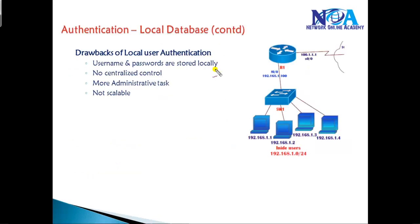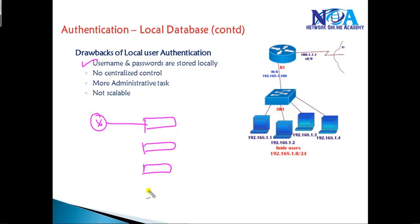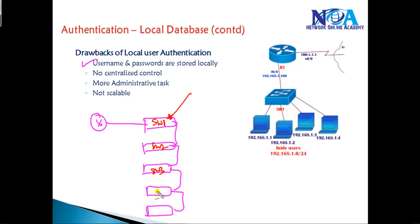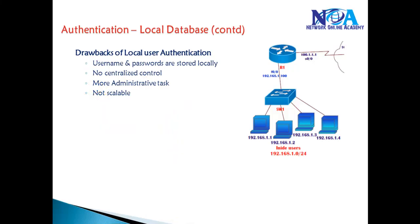One major drawback with local-based authentication is that we need to create a username and password on each local device. For example, in a big network with a router connected to multiple switches — say switch one through switch five — we need to go to each and every device and create a username and password. There is no centralized control, which increases the administrative task and is not scalable for large networks.